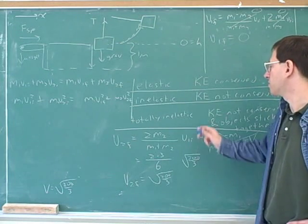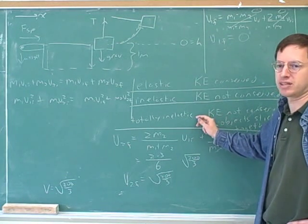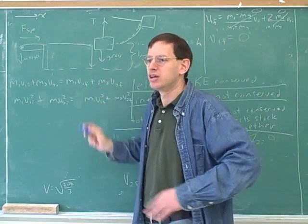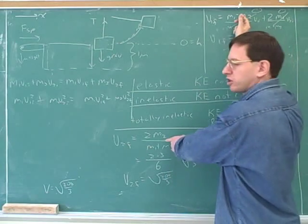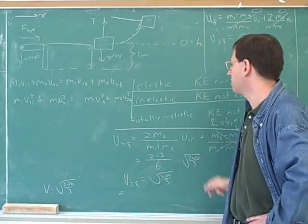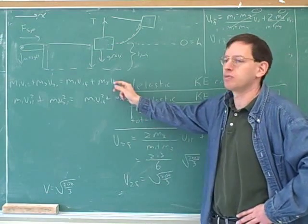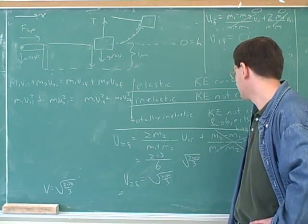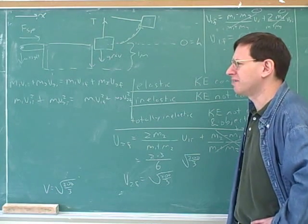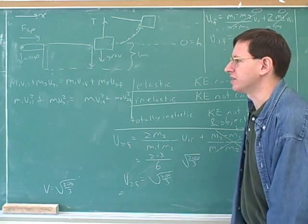But that's okay because when they're sticking together, we have something else that helps us. When they're sticking together, we have the fact that there's only one object after the collision. So for an elastic collision, we have extra help from these two cookbook equations that come from conservation of energy. And when the objects stick together, we have extra help from the fact that there's only one object after the collision.